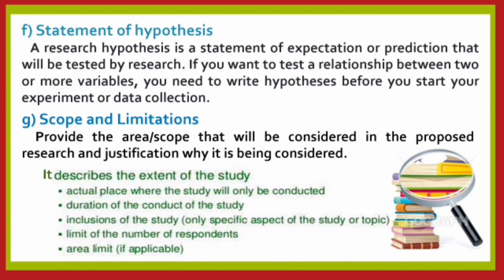Scope and limitations provide the area or scope that will be considered in the proposed research and the justification for why it is being considered. It describes the extent of the study — the actual place where the study will be conducted, the duration of the study, inclusion of specific aspects of the study, the limit of the number of respondents, and the area limit. The researcher should also provide clear information about the number of respondents and duration.